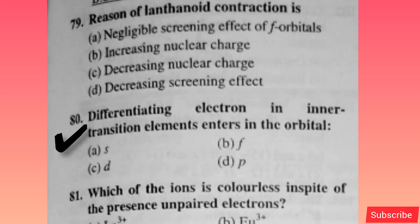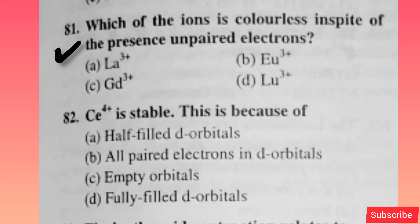The differentiating electron in inner transition elements enters the f orbital — option B is correct. Which of the following ion is colorless in spite of the presence of unpaired electrons? Option C is correct.